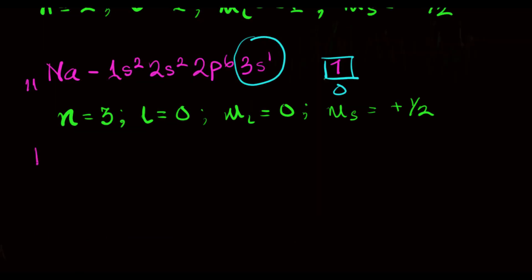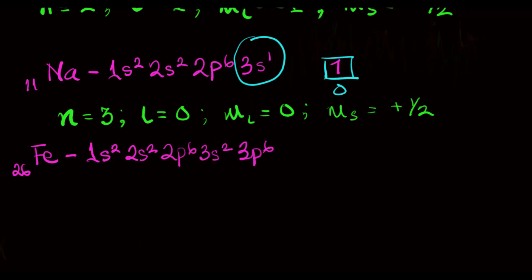So for the iron atom, being a transition metal, it has the electronic configuration 1s2, 2s2, 2p6, 3s2, 3p6, 4s2, and 3d6. Our focus here is on the 3d electrons.